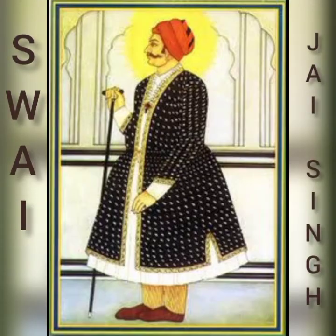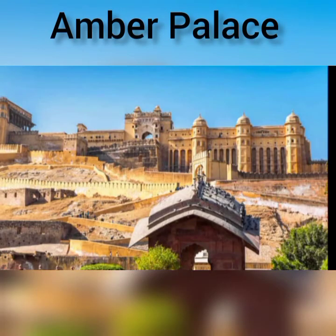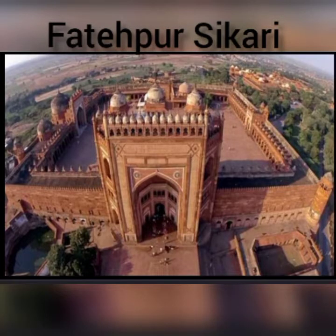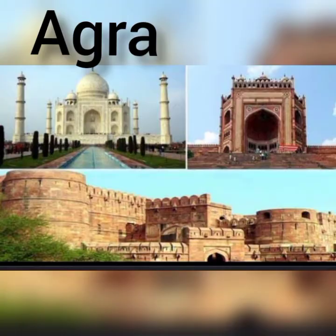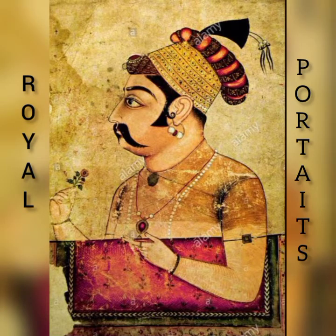Jaipur was founded by Savai Jai Singh, who ruled Jaipur from 1693 to 1743. He had the palace of Amber built in the indigenous Rajput style. Rajput architecture greatly influenced early Mughal architecture at Fatehpur Sikri and Agra, but in the paintings of royal portraits we can see the Mughal influence.